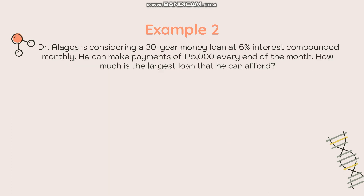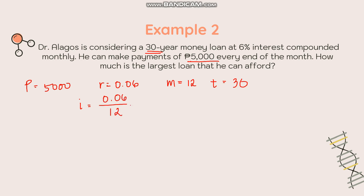Identifying the values: P = 5,000; r = 0.06; m = 12 (monthly compounding); t = 30 years. We compute i = r/m = 0.06/12 = 0.005, and n = t × m = 30 × 12 = 360.